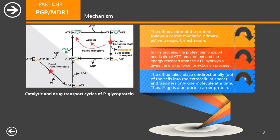The efflux action of the protein follows a carrier-mediated primary active transport mechanism. In this process, the protein pump export needs direct ATP, and the energy released from ATP hydrolysis gives the driving force for the extrusion process. The efflux takes place unidirectionally out of the cells into the extracellular space, and transfers only one molecule at a time. Thus, PGP is a uniporter carrier protein.